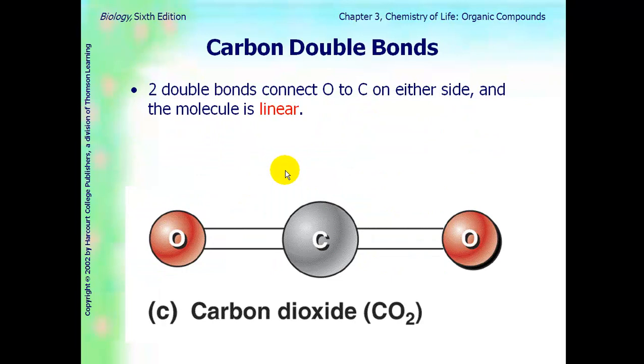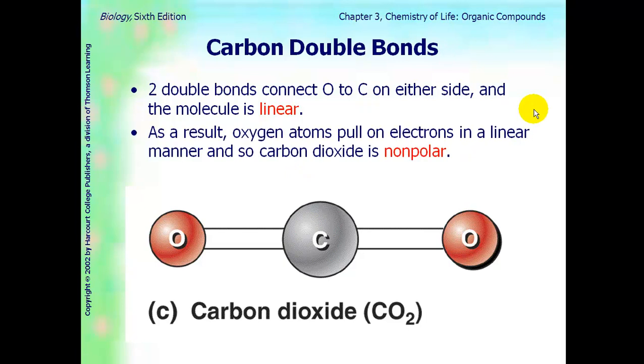We talked about double bonds, double covalent bonds. Two double bonds will connect for carbon dioxide. The oxygens will connect on each side, and it makes the molecule linear. And because it is linear, the oxygen atoms are pulling those electrons in a linear manner. And so carbon dioxide as a whole is going to be non-polar.